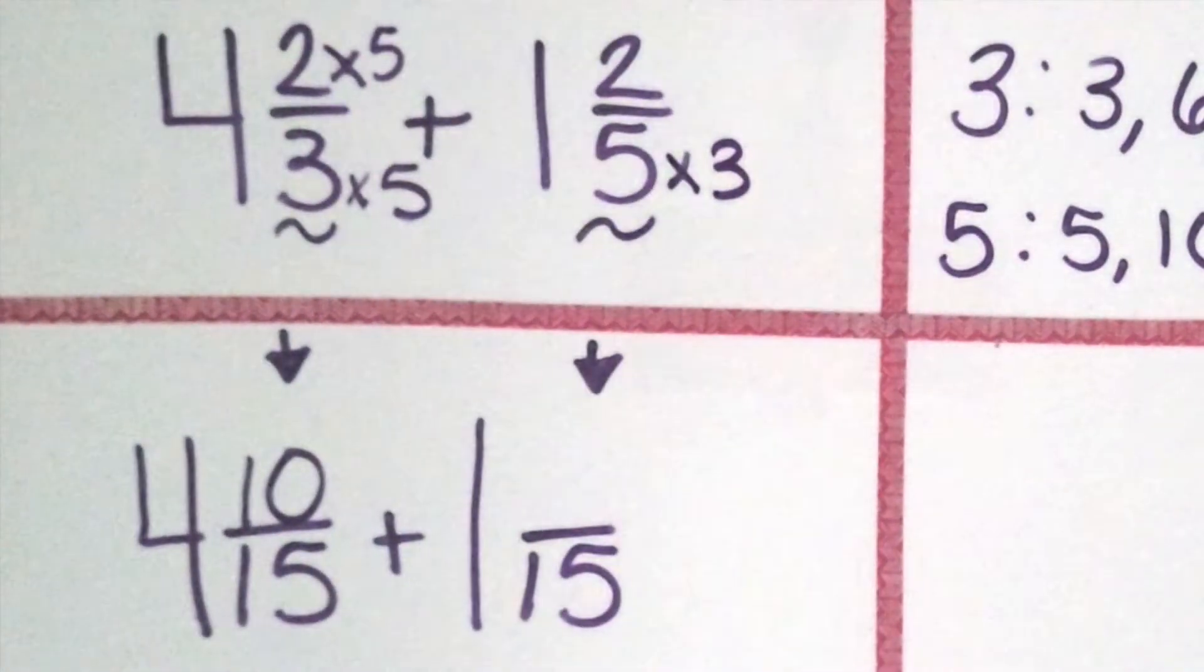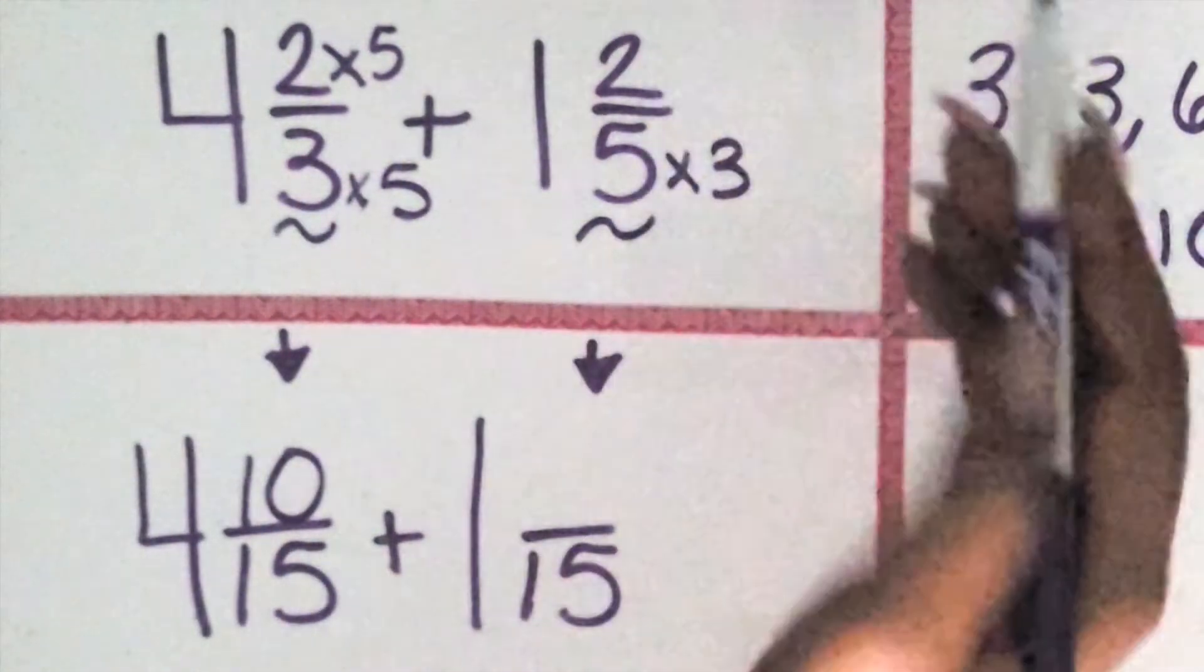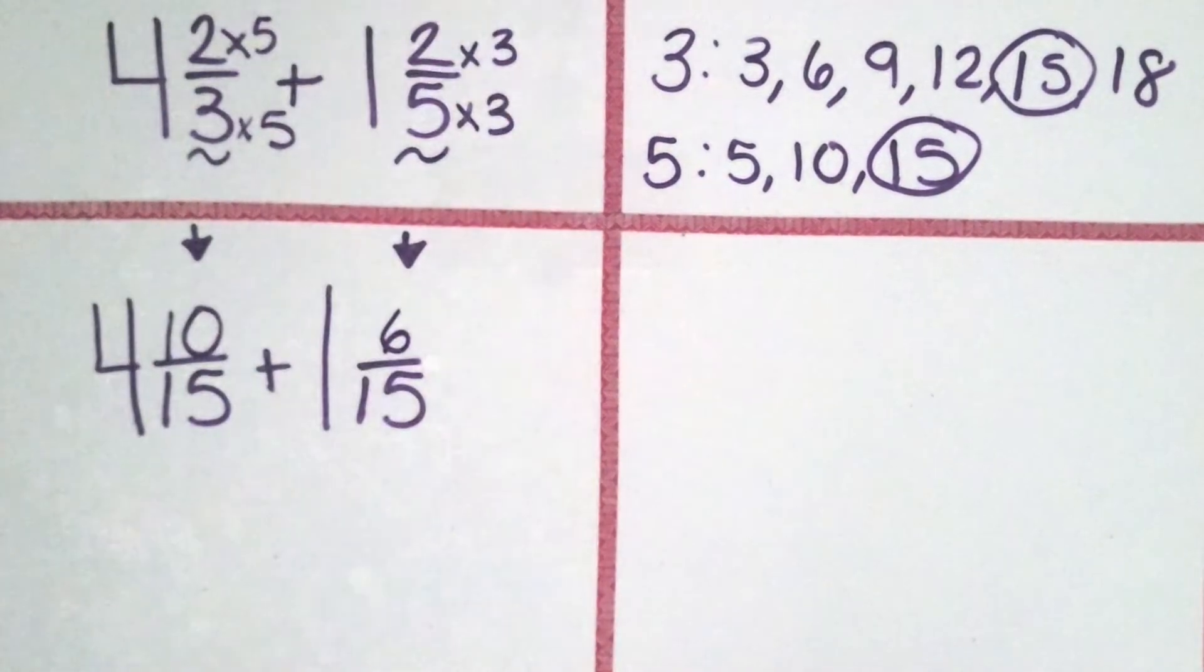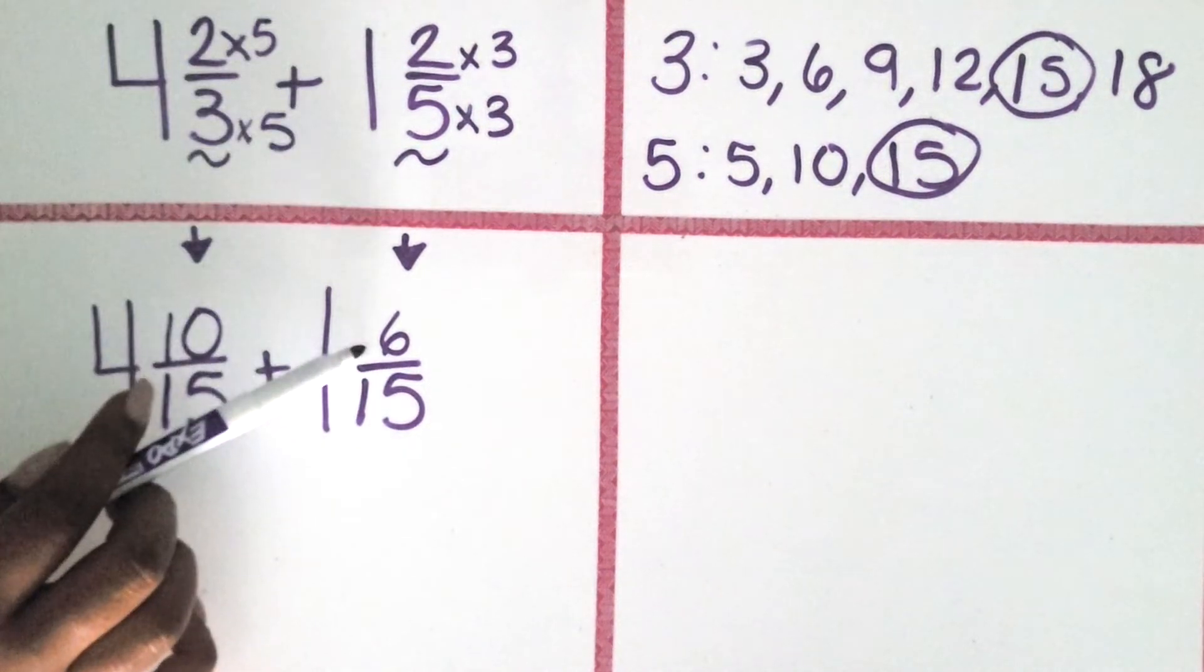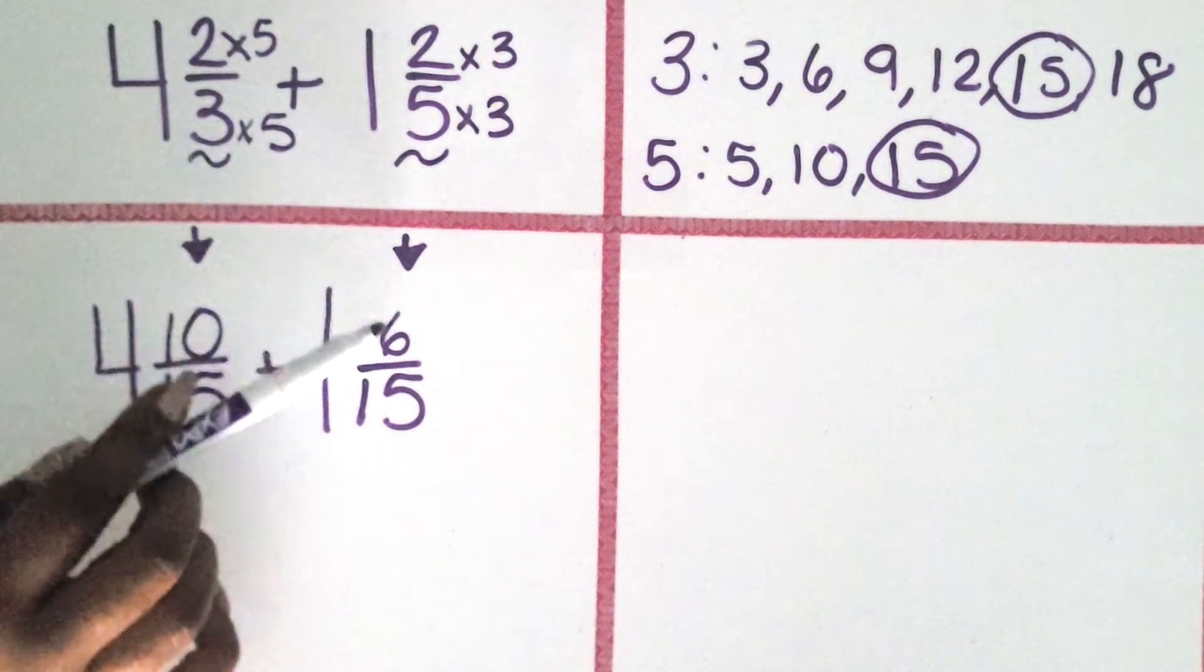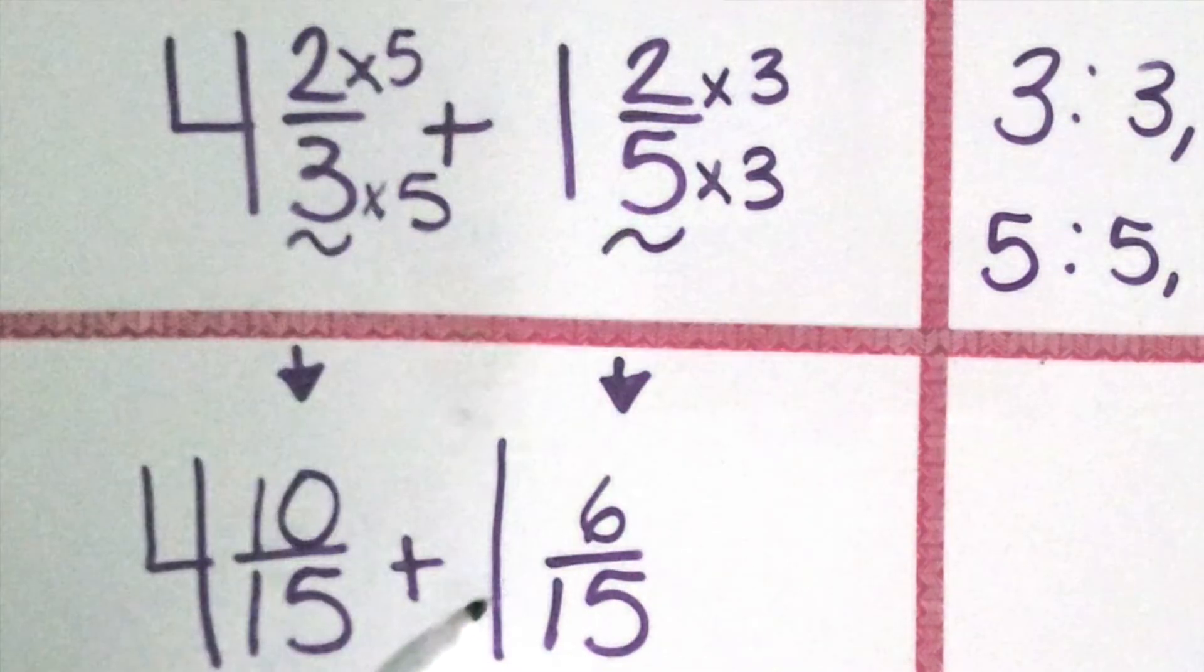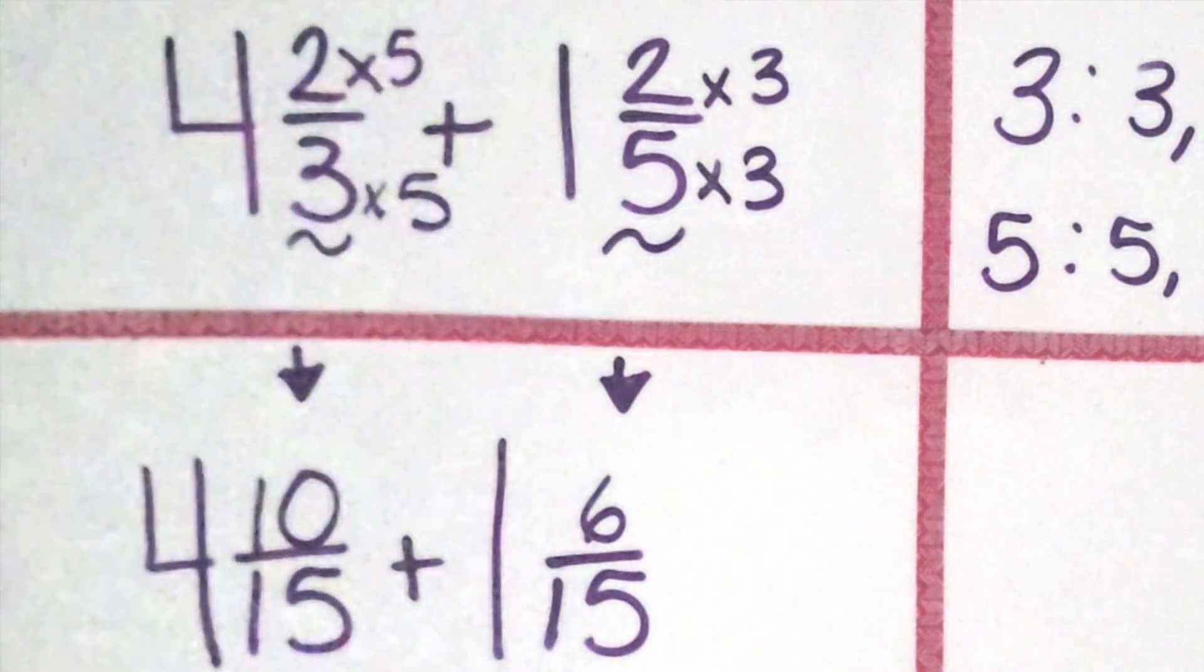You need to multiply the numerator 2 by the same amount. Three groups of 2 or 3 times 2 is 6. That means the equivalent fraction for 2/5 is 6/15. We renamed 1 2/5 as 1 6/15.